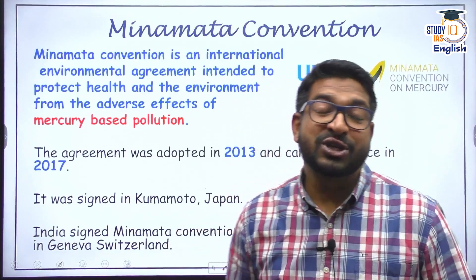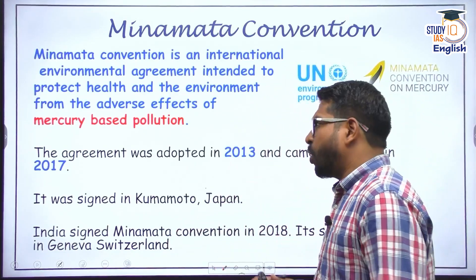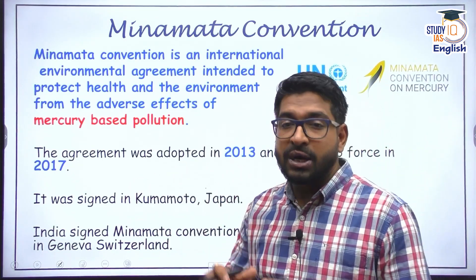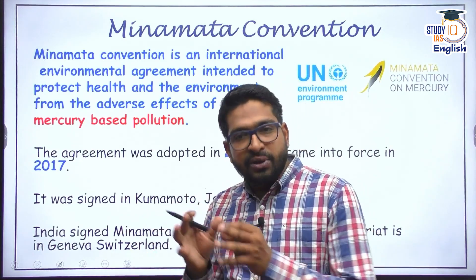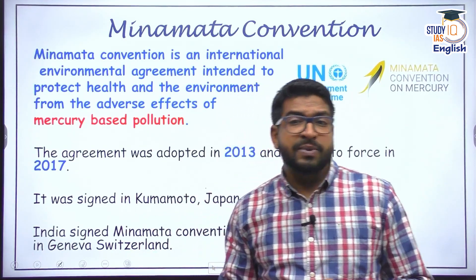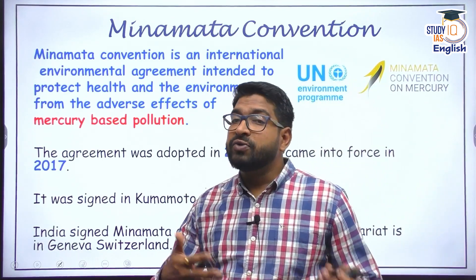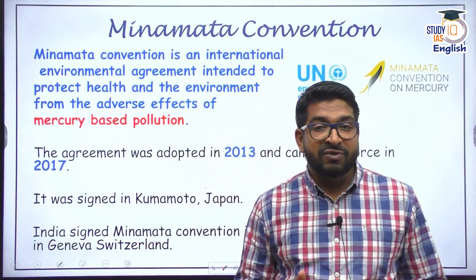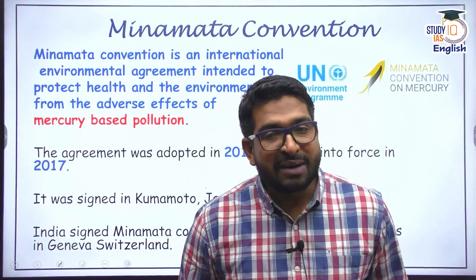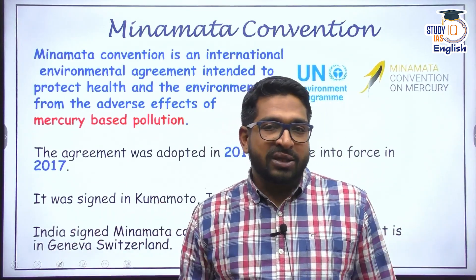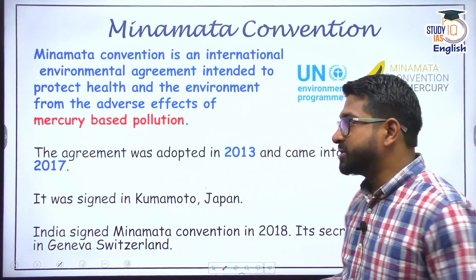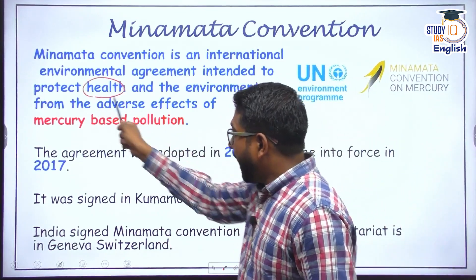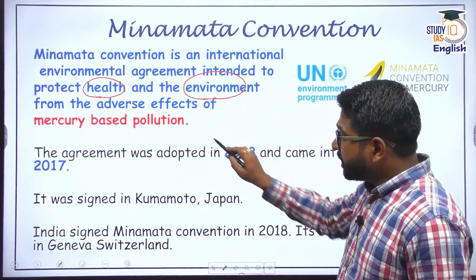Let us begin our discussion about the Minamata convention. A convention is basically an agreement or a meeting between parties or nations joined for a particular agenda. We know about the UNFCCC, the Biodiversity Convention, and the Combating Desertification Convention, all of which came in 1992. The Minamata convention brought parties together to counter mercury poisoning. It is an agreement which intends to protect public health and the environment from the effects of mercury-based pollution.